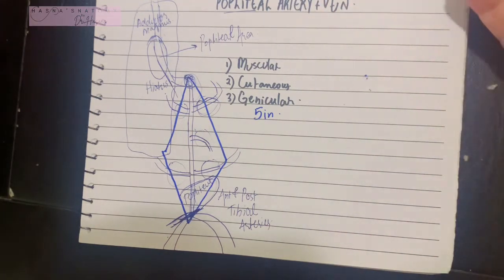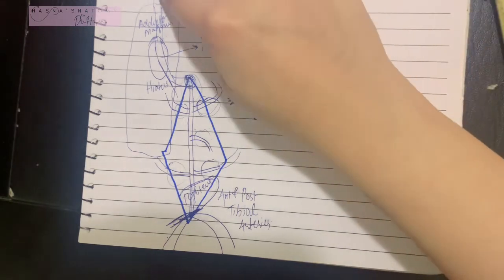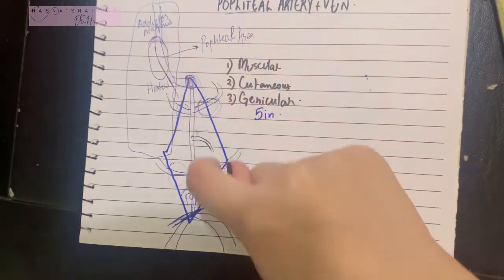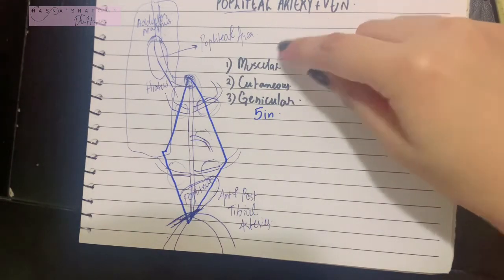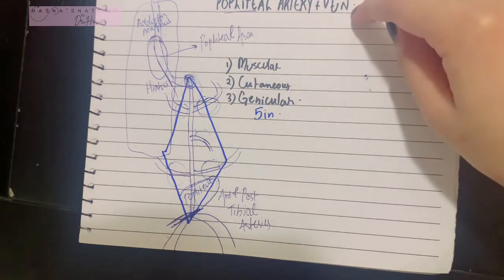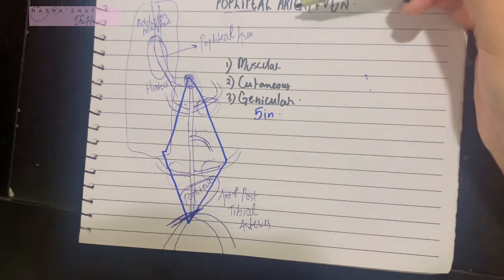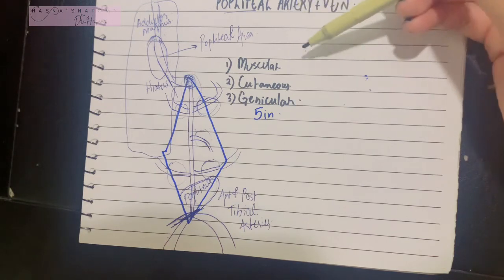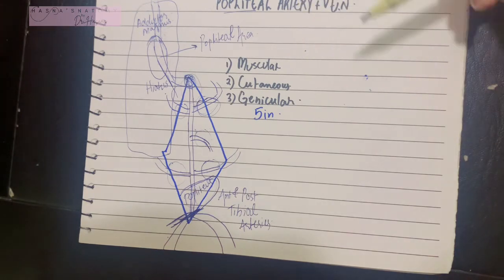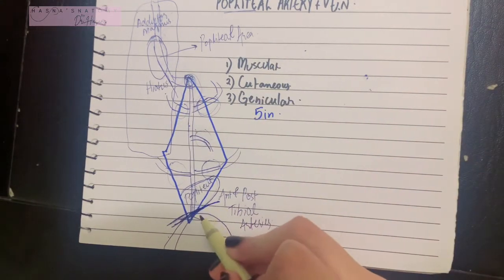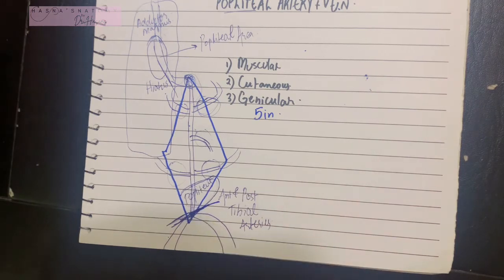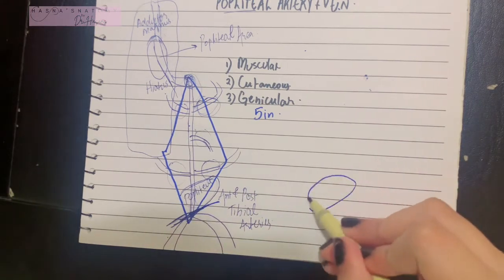Now let's talk about the popliteal vein. It is quite similar to the popliteal artery, with the key difference being direction — the artery goes downward while the vein goes upward. Arteries give branches while veins collect tributaries, as veins carry blood to the heart and arteries carry it away. Arteries carry oxygenated blood; veins carry deoxygenated blood away.